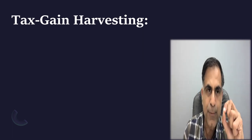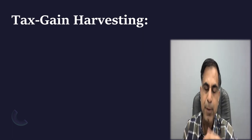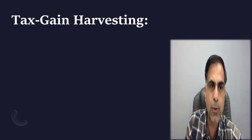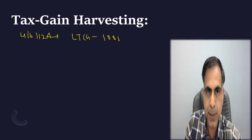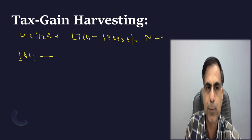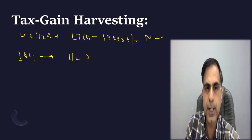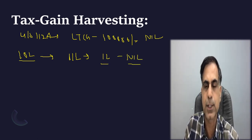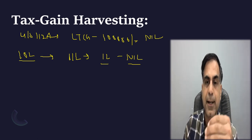Now let me discuss tax gain harvesting. There is no specific provision in the income tax law for it, but because of the current tax structure, this practice may be adopted. Under Section 112A of the Income Tax Act 1961, any long-term capital gain up to rupees 1 lakh is taxed at nil rate. So if a small investor has a portfolio of rupees 10 lakh which has grown to rupees 11 lakh, he can sell all those long-term securities and book rupees 1 lakh of LTCG — paying zero tax — and then reacquire them at rupees 11 lakh.